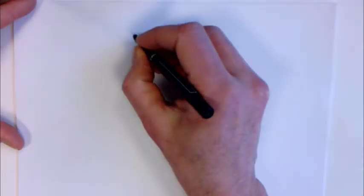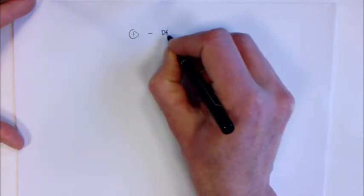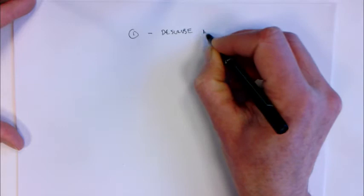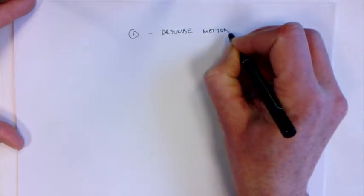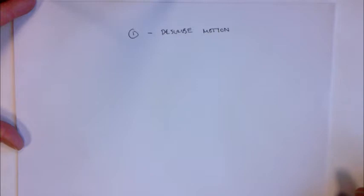If you think about what we've done so far, module one dealt with the question of how do we describe motion. These are the questions of what's a good coordinate system to choose, how do I think about acceleration, how do I think about velocity and so on. The real question in that module was not how do we predict motion — it was simply how do we describe it.